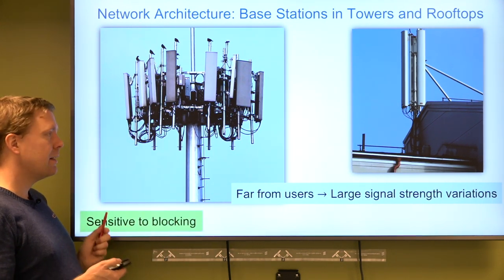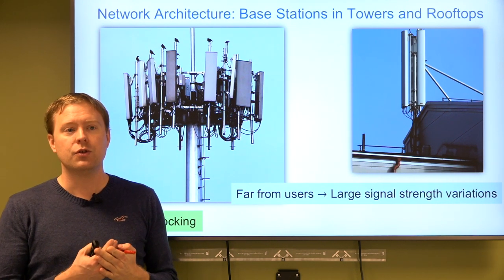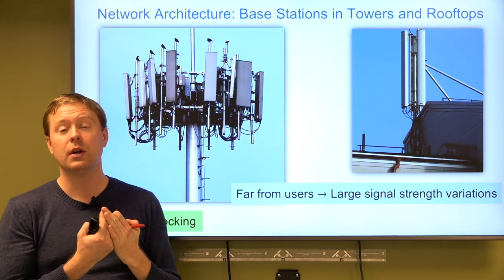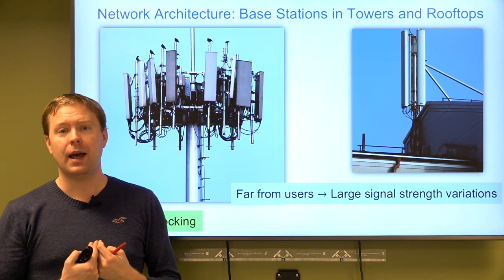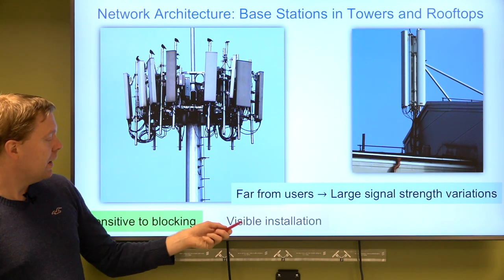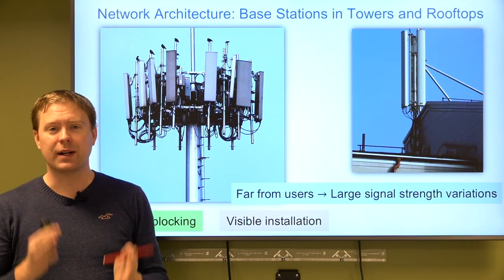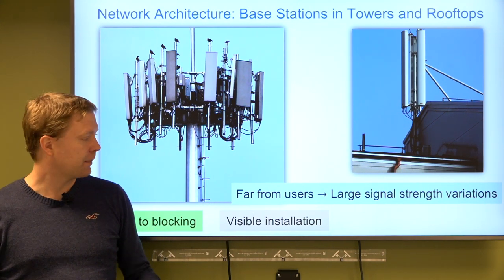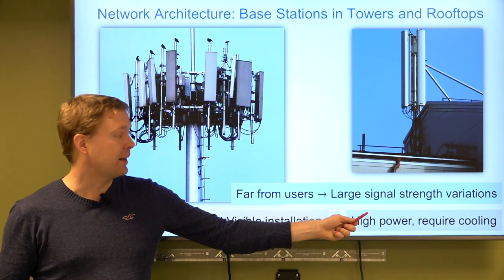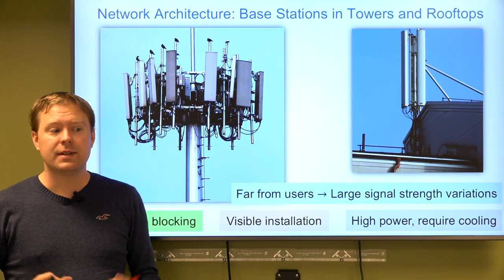Being far from users means large signal strength variations, which creates large variations in the data rates users can achieve. It also makes the technology sensitive to blockage — a big object between you and the base station tower can block a lot of signal power, and that might be the only base station that can cover you at that location. The antennas also need to be large and visible to achieve sufficient directivity to reach distant users, and the high transmit power required even with directivity necessitates active cooling, making them even larger.